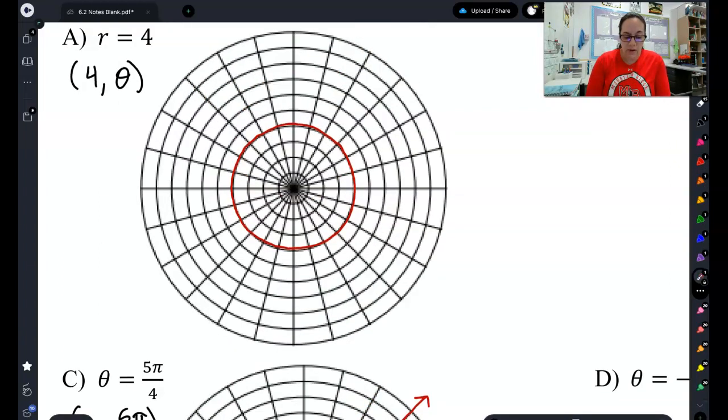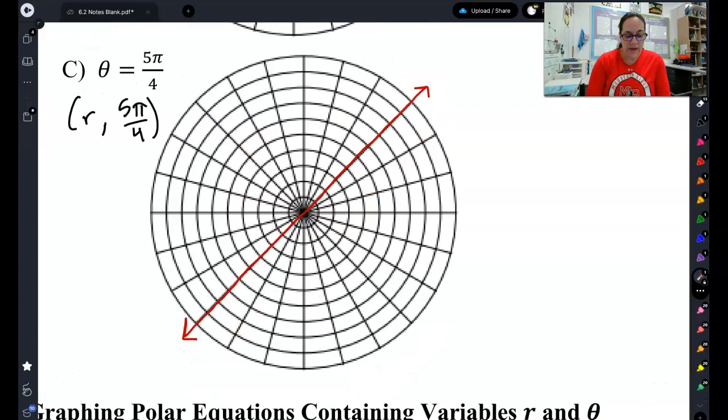So if it's r equals, it looks like a circle. If it's theta equals, it looks like a straight line.